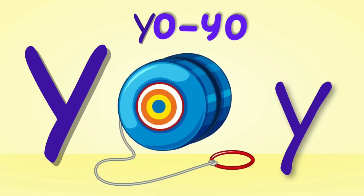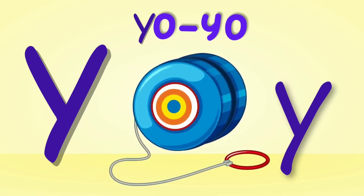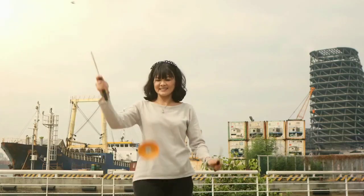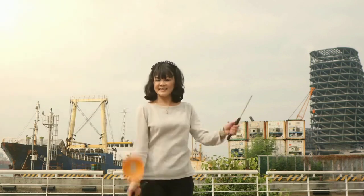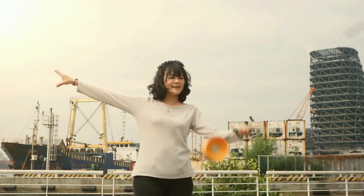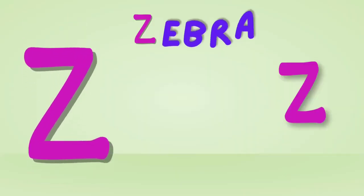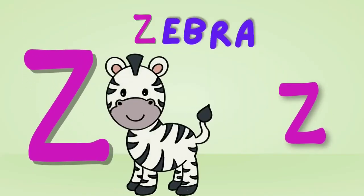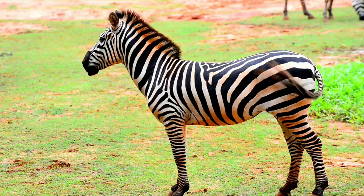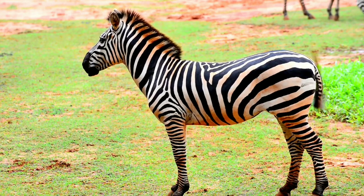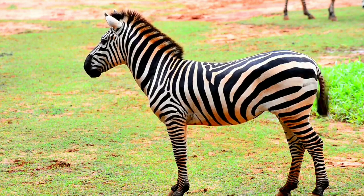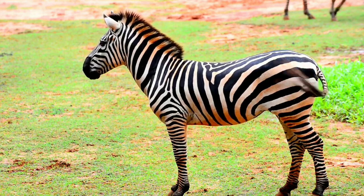Y is for yo-yo. Yo-yo, yo-yo — this is a yo-yo. Z is for zebra. Zebra, zebra — this is a zebra.